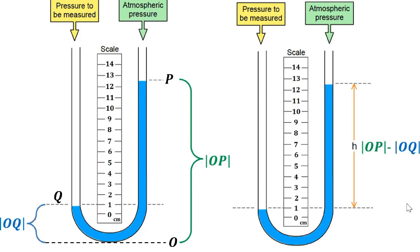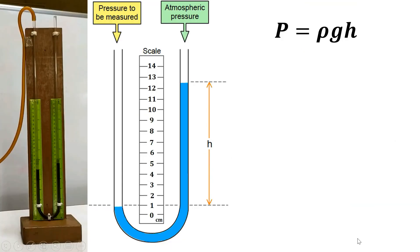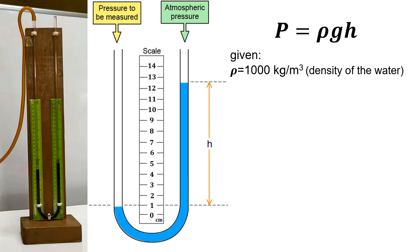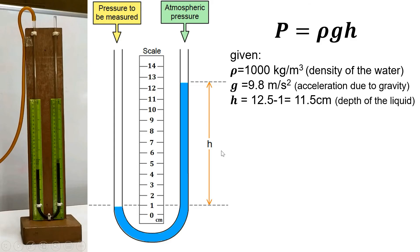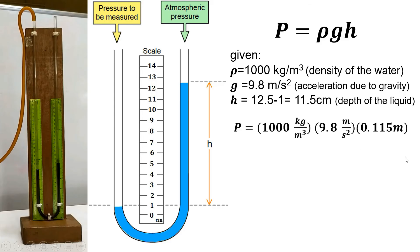Let's solve an example to find pressure using a manometer. Pressure equals density times acceleration due to gravity times height. The mass density of water is 1,000 kg/m³ and acceleration due to gravity is 9.8 m/s². From the manometer reading, OP is 12.5 cm and OQ is 1 cm, so the difference is 11.5 cm — the depth of our liquid. Multiplying the three values together, the answer is 1,127 Pascal (kg/m·s²).